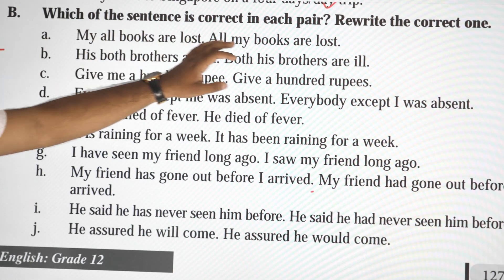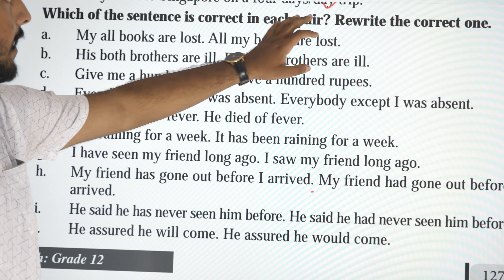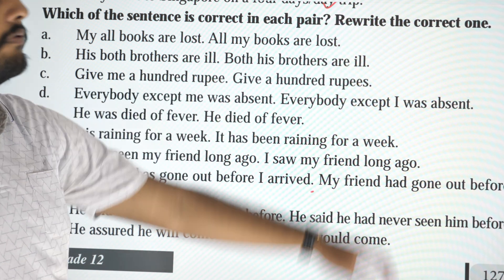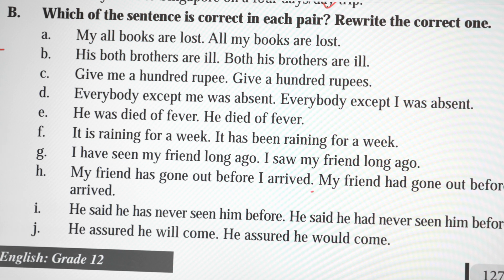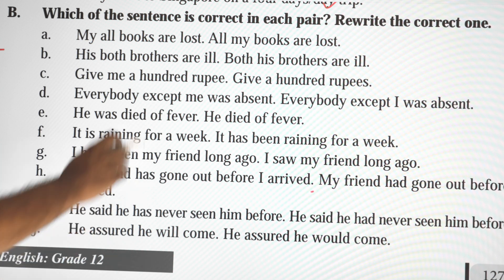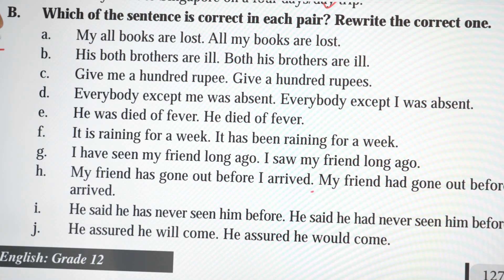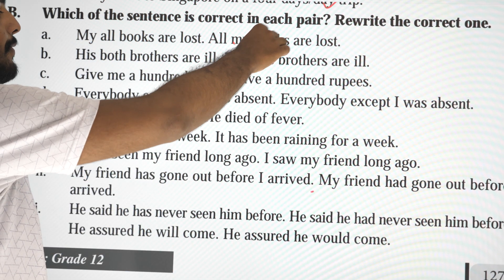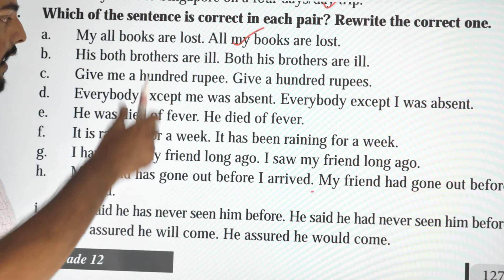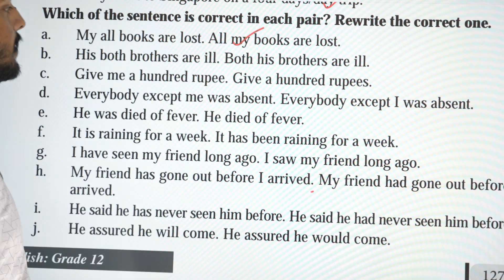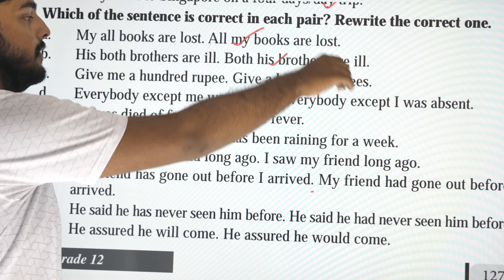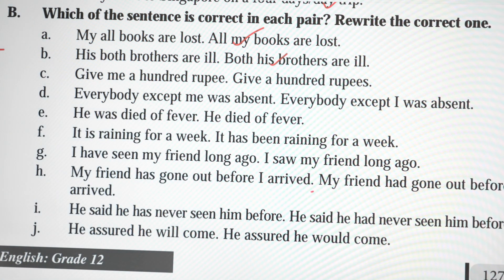Which of the sentences is correct in each pair? We write the correct one. My all books are lost, or all my books are lost? All my books are lost is the correct answer. His both brothers are ill, or both his brothers are ill? Both his brothers are ill.